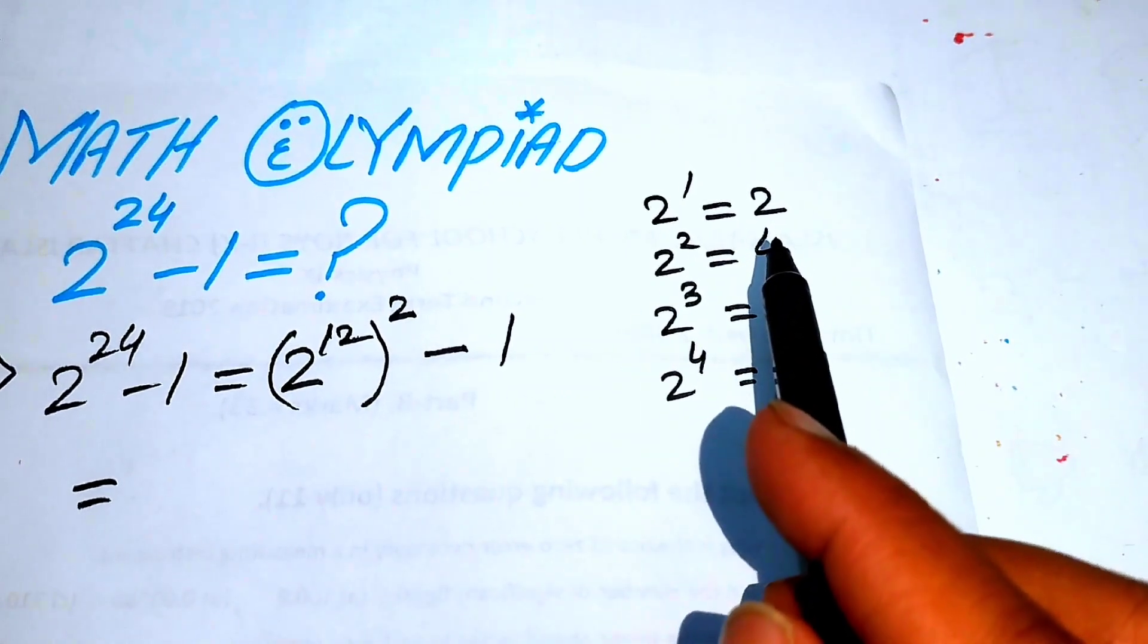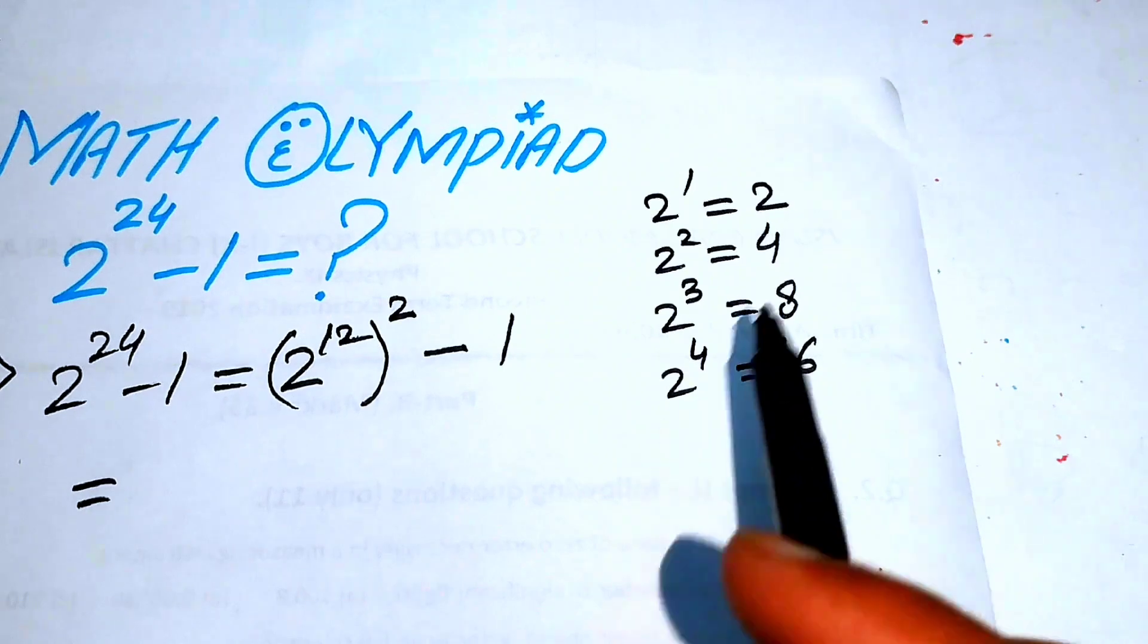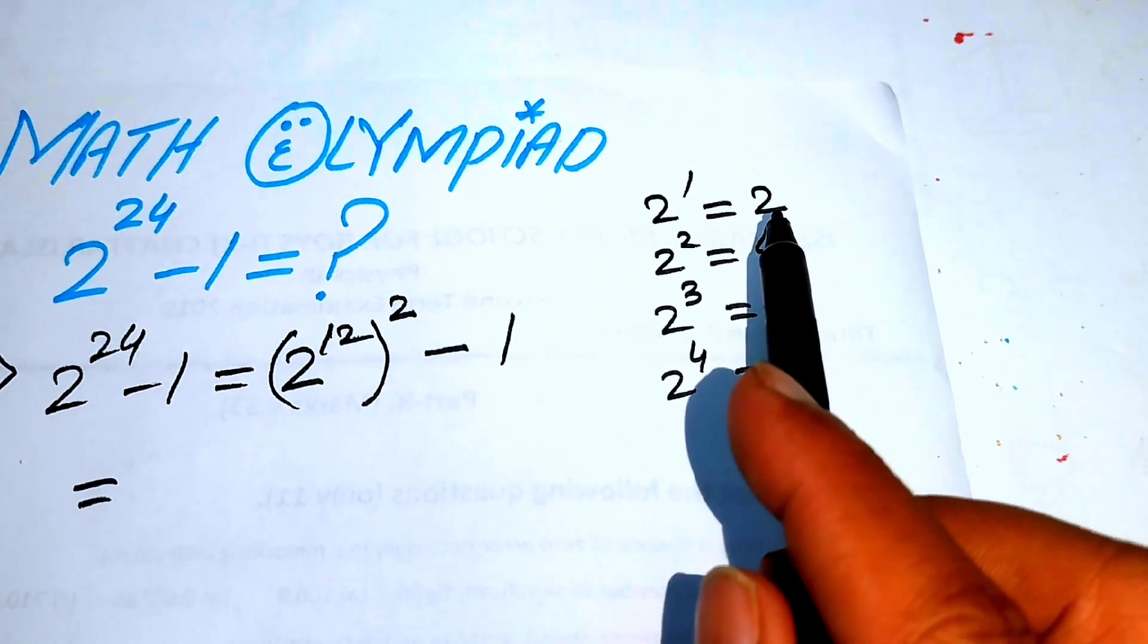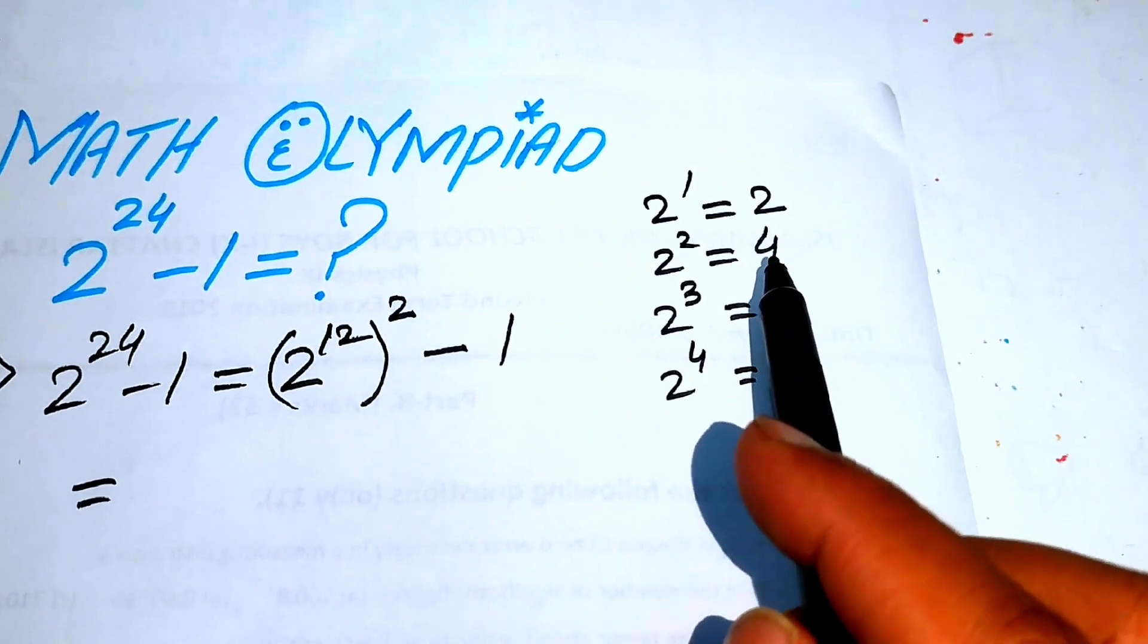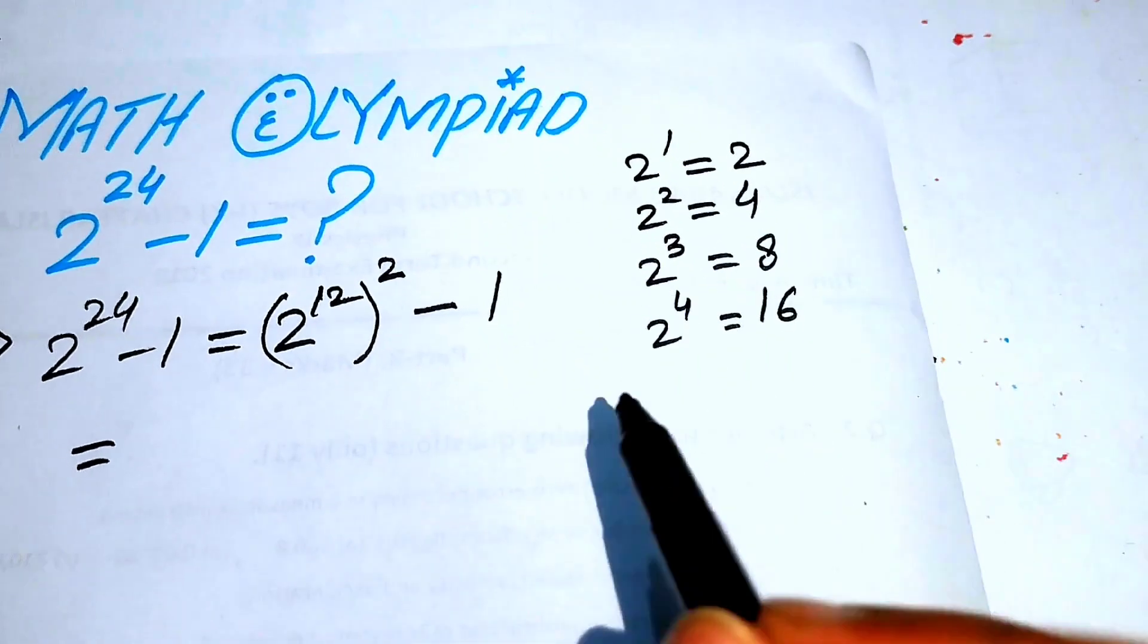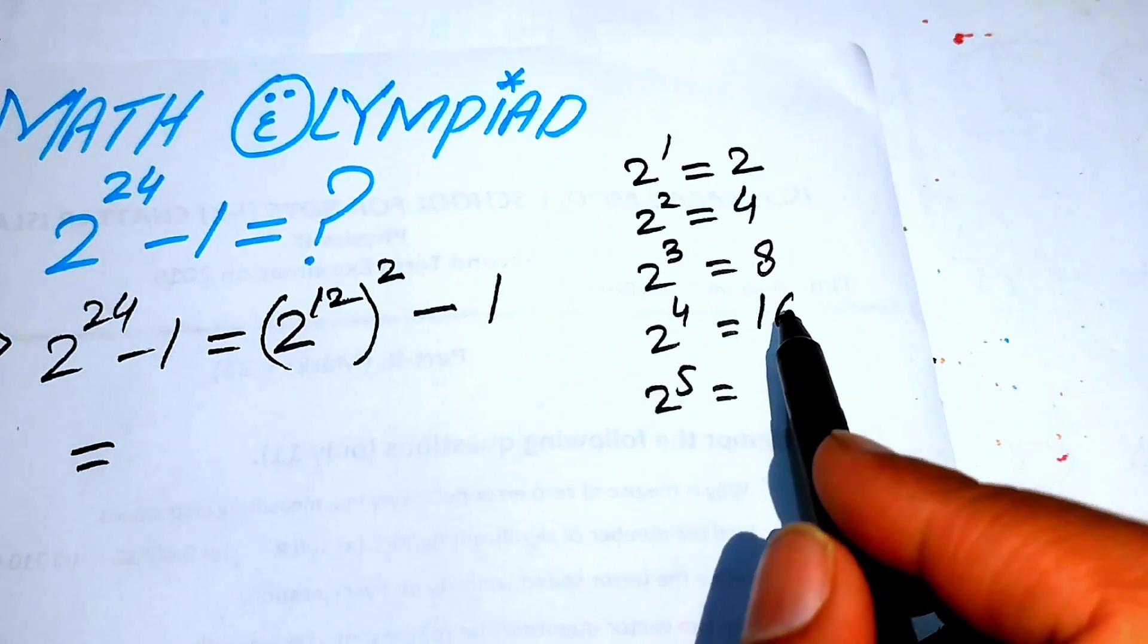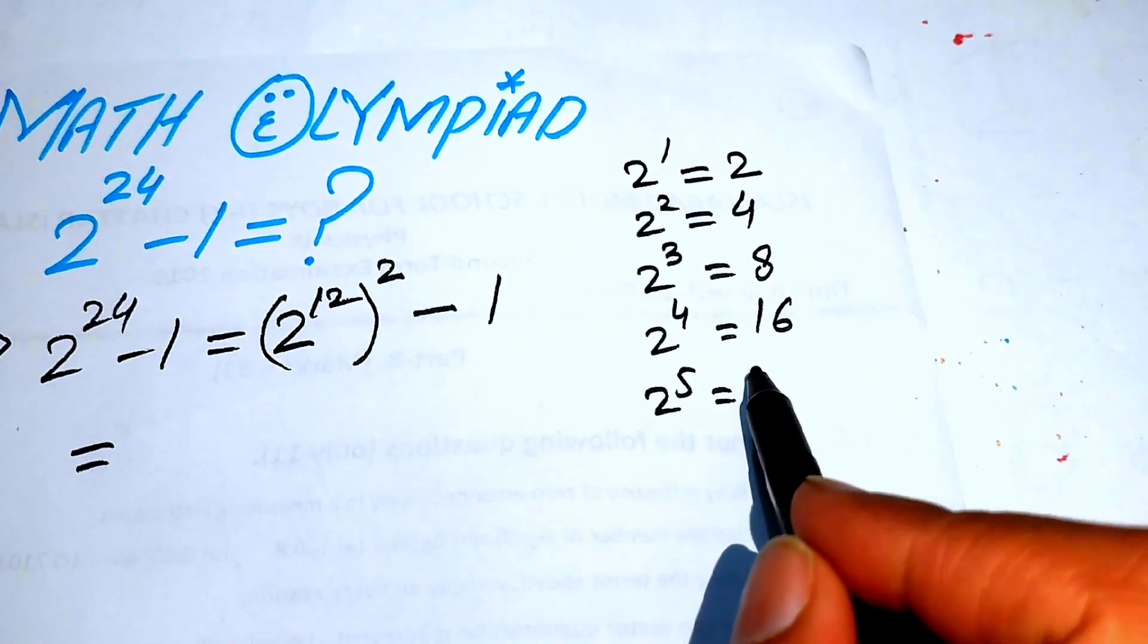Each previous term multiplied by 2 gives the next term. So here you have 2, when we multiply 2 by 2 you get 4, and we multiply 4 by 2 you get 8, and multiply 8 by 2 is 16. Similarly, 2 to the power of 5 is 16 times 2, so it equals 32.